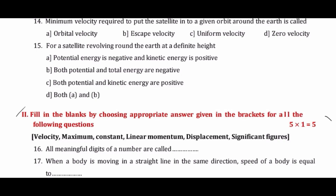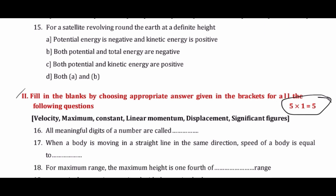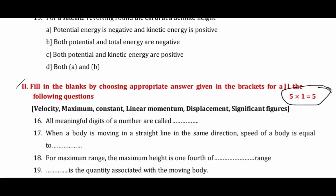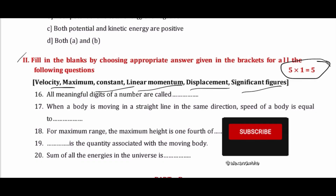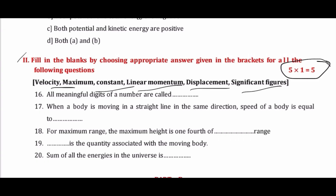To avoid confusion, one extra option is given in the answer bracket — that extra option is the wrong option. While answering, you have to choose the correct answer. This completes Part A, which has two mains: Main 1 is MCQ type and Main 2 is fill in the blank type.